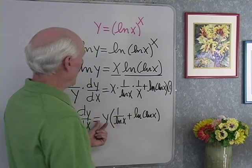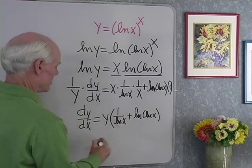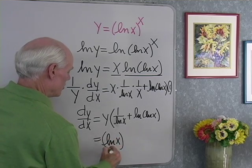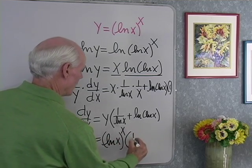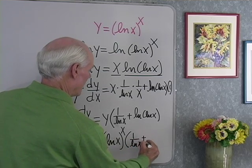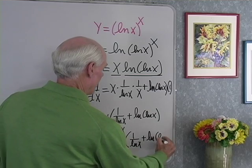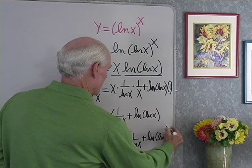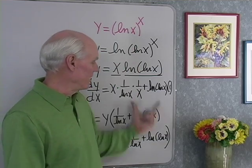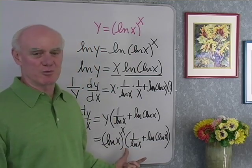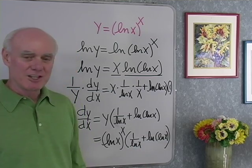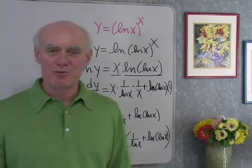And y is equal to log x to the x. So let's write that out: log x to the x, times (1 over log x plus the log of the log of x). Here's a pretty complicated looking function, and without really too much work, just using our properties of logarithms, we're able to find that derivative. So that's a look at logarithmic differentiation.